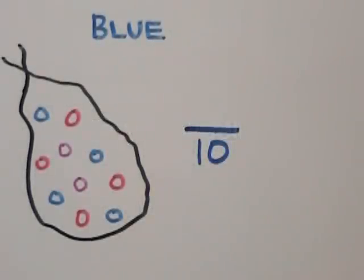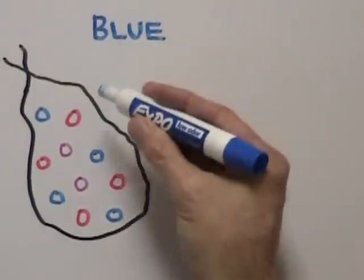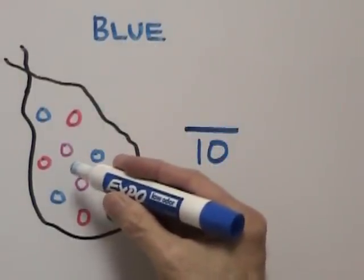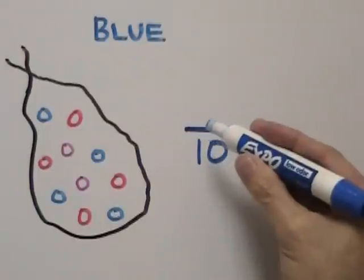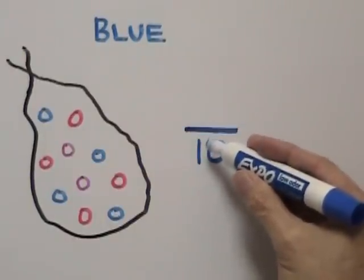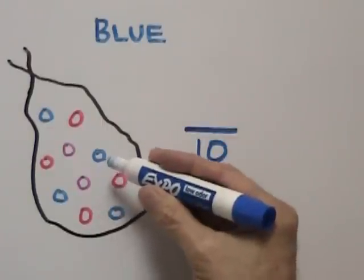If we want to find the probability of randomly choosing a blue marble from this bag of colored marbles, we need to write a fraction. The denominator of the fraction will be the total amount of marbles in the bag.